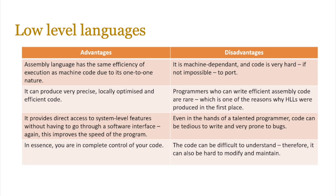In essence, you are in complete control of your code if you're using a low-level language. However, it does have disadvantages — it's very machine-dependent and very hard to code. Programmers who can write assembly code are very rare, which is one of the reasons high-level languages were invented: we wanted many more people to learn programming rather than just a few specialists. Even in the hands of talented programmers, code can be very tedious to write and prone to bugs. Because it's very difficult to understand, it can also be very hard to modify and maintain.